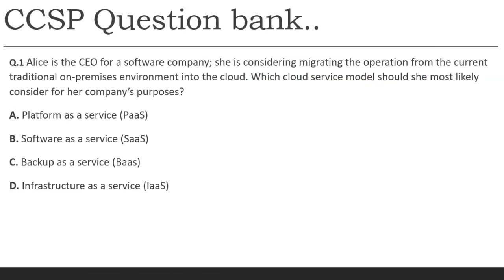So we have covered the theory — IaaS, PaaS, SaaS, and the additional models: identity as a service, security as a service, and function as a service. You can expect at least three to four questions in your exam from service and deployment models. Now I'll cover a few questions from the question banks.